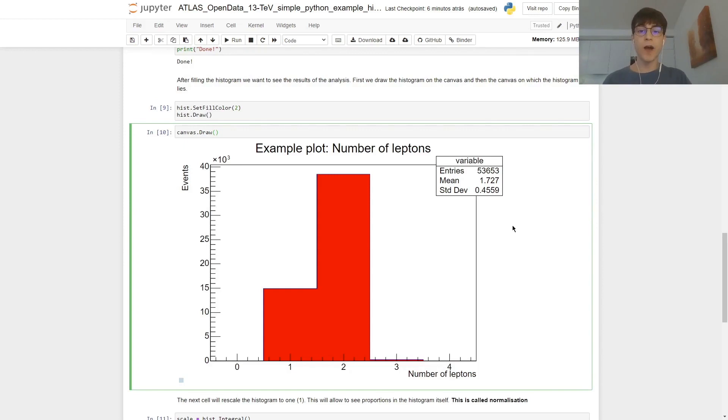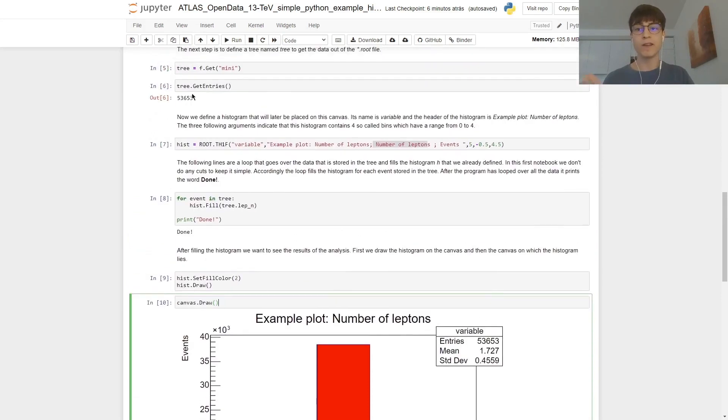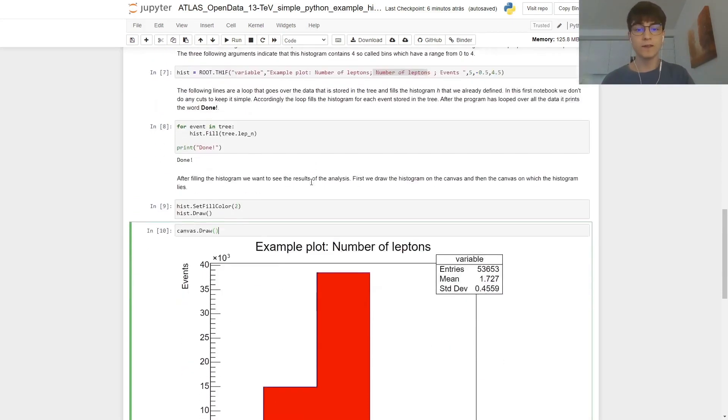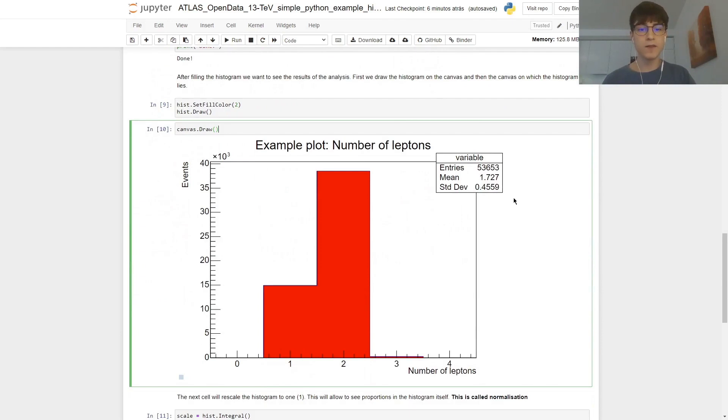As such, the final output is our histogram. We can see on the y-axis, that's the number of events. On the x-axis is the number of leptons, our title, example plot number of leptons. And then a legend, which says how many entries we have, 53,653. That checks with the amount of entries we saw in the tree. So we're not excluding any of those values. It also gives a bit of statistics about it. So the mean number of leptons is about 1.7, and the standard deviation of our number of leptons is roughly 0.5.